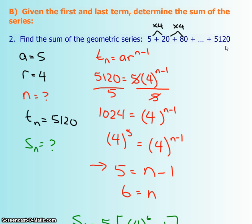They never told us how many terms there are, but this is going to be a clue. So I'm going to take my tn formula and I'm going to sub it into the tn formula for the geometric. And then maybe I can solve for my n. So my a was 5, r is 4, and tn is 5,120.